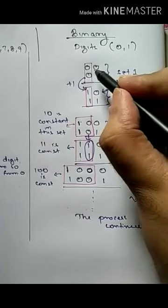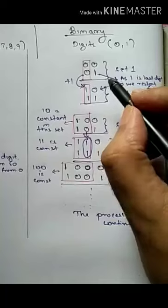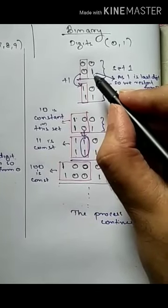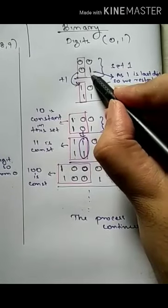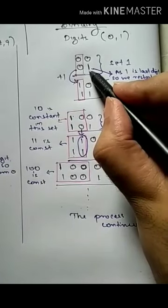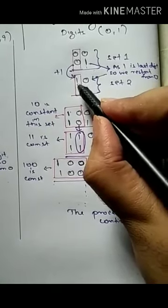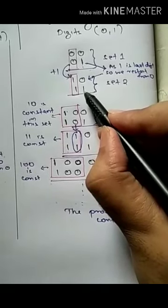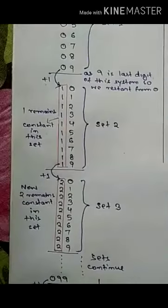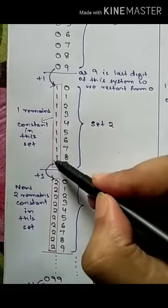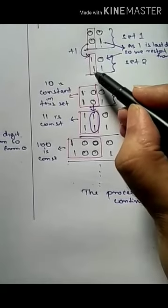Just 0 and 1 can be written as 0001, since leading zeros have no value. After this 1, since 1 is the last digit of binary, we restart from 0 and add 1 to the left as per the rule. After 0, one comes again, and this 1 remains constant throughout this set — similarly to how in decimal after 0 it becomes 1 and remains constant. In binary also, 1 remains constant throughout this set.